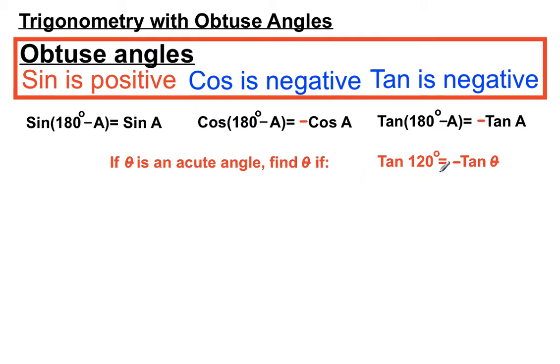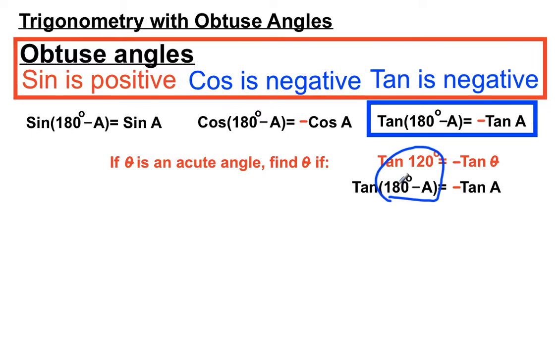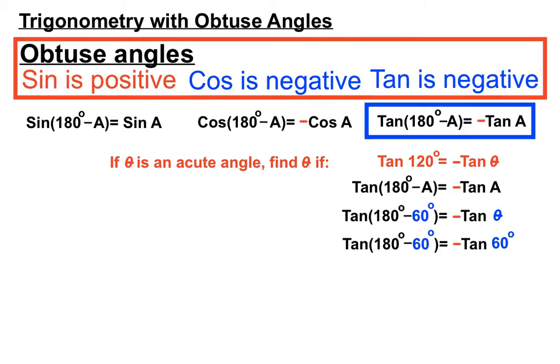Let's see if it pans out for the tan example over here. We have tan 120 equals minus tan θ. Let's compare it to the tan result from above that we're using for obtuse angles. Let's have a look at this bit again. Have a look at the difference between 180 and 120. And that gets you your answer straight away. θ equals 60.